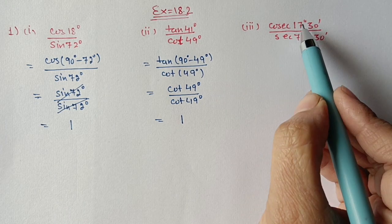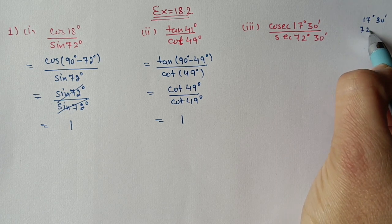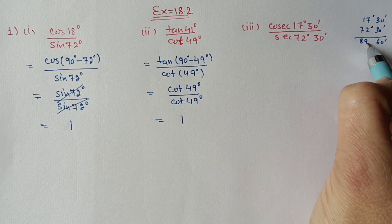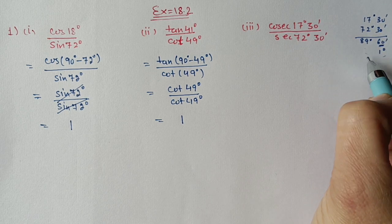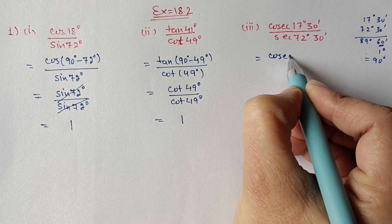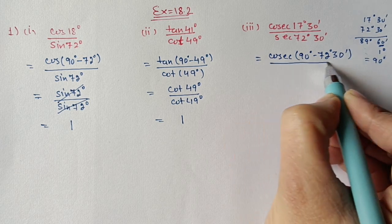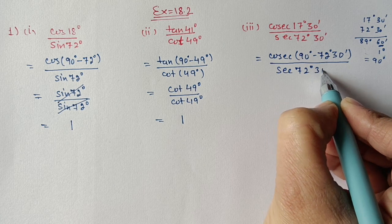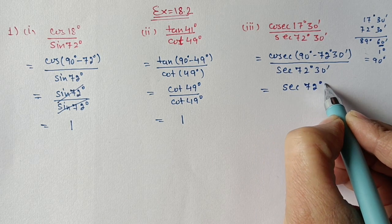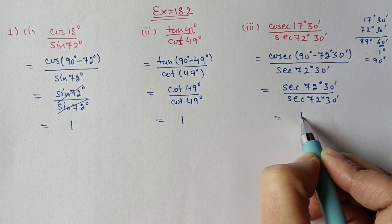Next part: cos 17°30' / sin 72°30'. Adding 17°30' and 72°30' gives 89° 60' = 89° + 1° = 90°, so these two are also complementary. We write cos 17°30' = cos(90° − 72°30'). Using cos(90 − θ) = sin θ, it becomes sin 72°30' / sin 72°30', which cancels and gives 1.